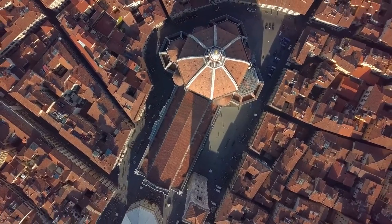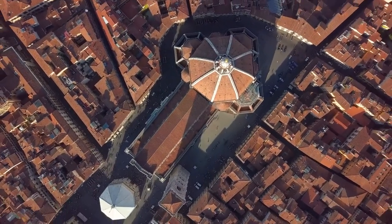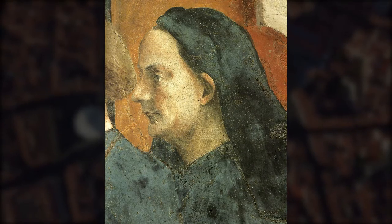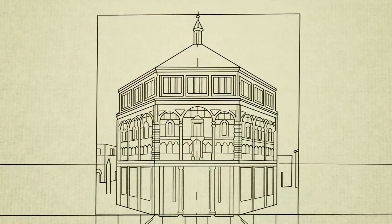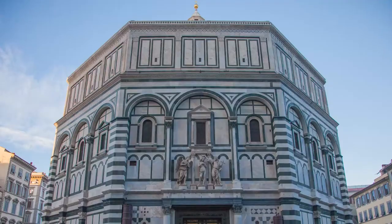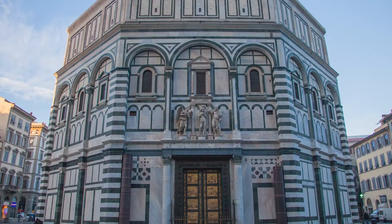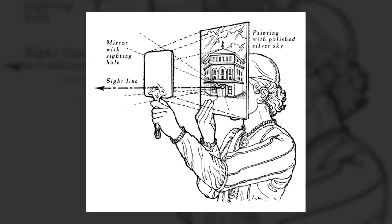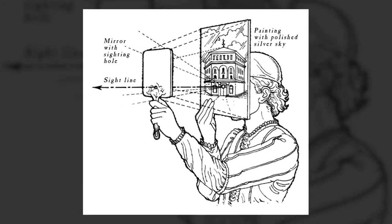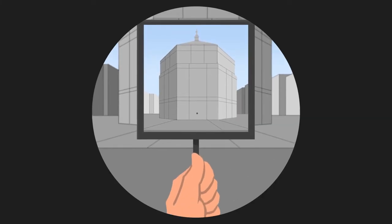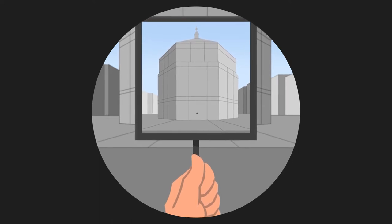The idea of linear perspective in art that we know today was first used around 1415 by an artist and architect named Filippo Brunelleschi. Brunelleschi experimented with a mathematical system of lines that met at a single vanishing point. A famous experiment of his was done while standing in front of the baptistry in Florence — he used a painting with a hole in it and a mirror to compare his own perspective with the perspective of the painting. His experiments proved to be a success, and he was able to draw a building with incredible realism. These original perspective experiments have since been lost, but Brunelleschi's ideas spread.